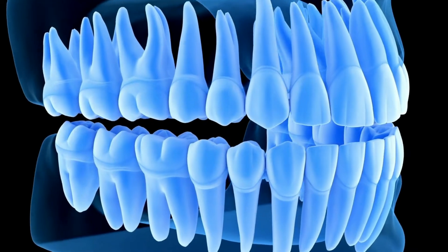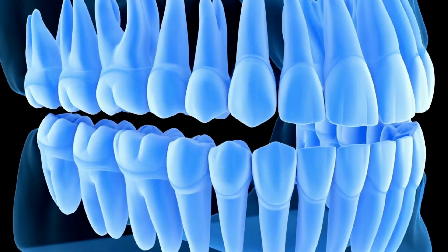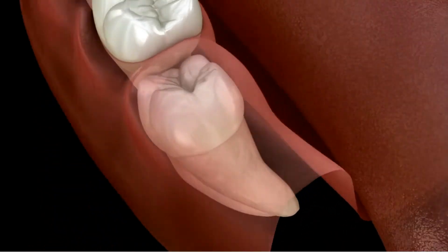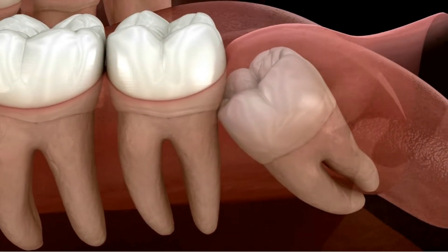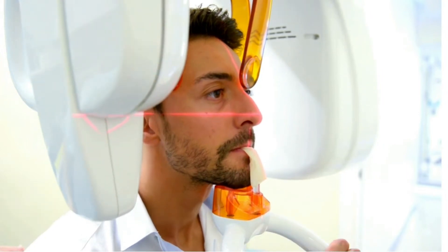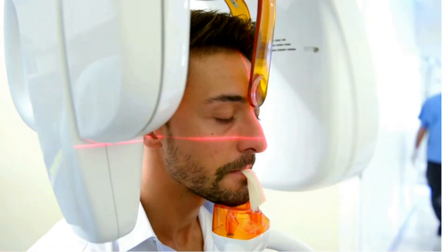Oftentimes, dentists need to derive 3D information to understand the spatial relationship of the structures imaged. To know the exact location of an impacted tooth or a foreign object within the jaw, you might have to consider a CBCT. But there's another way — you can use the SLOB technique and save the patient from excess radiation.